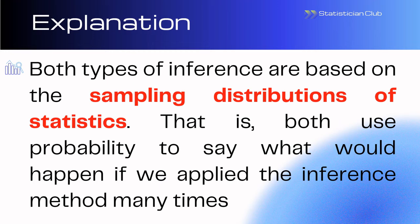So these two methods are based on sampling distribution. From samples we create sampling distribution and we proceed for estimation and hypothesis testing. These are based on sampling distribution of statistics, and both use probability to say what would happen if we apply the procedure many times.